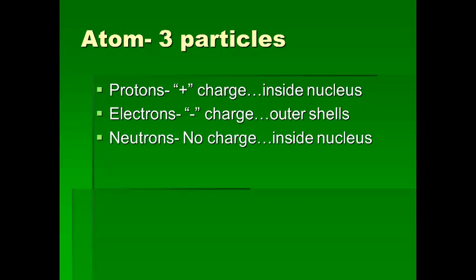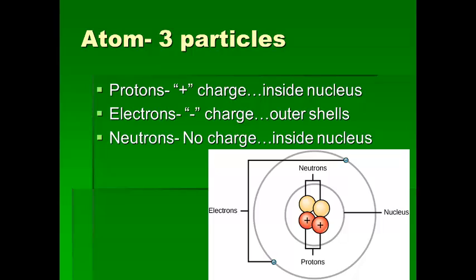You can pause that now to get those jotted down. Here's a little diagram of essentially what they look like — we have our protons in the middle, our neutrons, and then our electrons buzzing around in different energy levels outside of the nucleus.